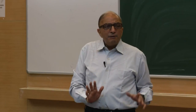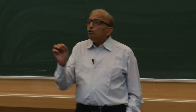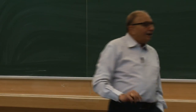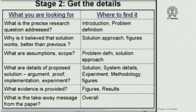On each of those 7 key papers, you should spend at least one to two hours — that is where you try to get the detailed stage-two information. What is the precise research question addressed? Why is the solution believed to work better than previous ones? What are the assumptions and scope? What are the details of the proposed solution — argument, proof, implementation, experiment? What evidence is provided in terms of results or figures? And what is the takeaway message? That is the overall conclusion, partly in the conclusions section but requiring your own judgment.